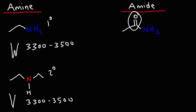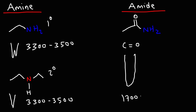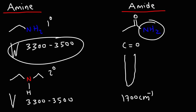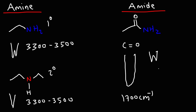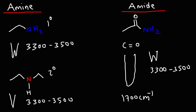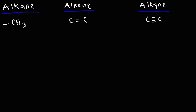The amide does have the carbonyl functional group, so we're going to have a CO stretch very close to 1,700. We also have the NH2 group, so we'll get a signal between 3,300 and 3,500 as well. To distinguish an amide from an amine, look for the presence of the carbonyl functional group. To distinguish a primary amine from a secondary amine, look for the double peak versus single peak.